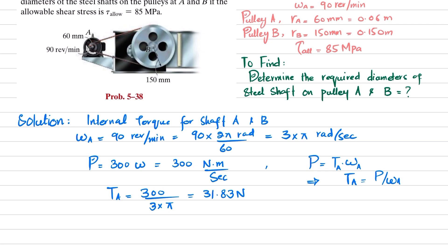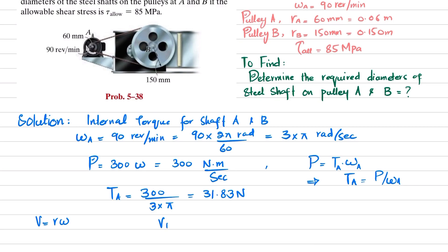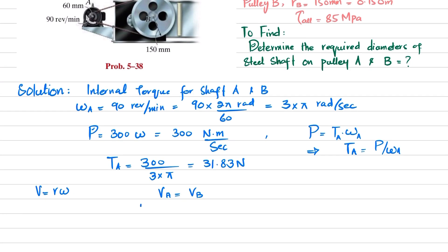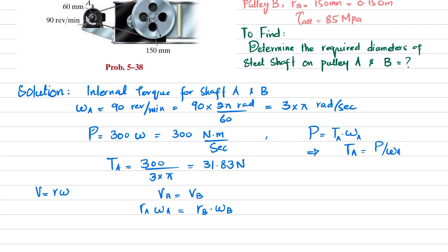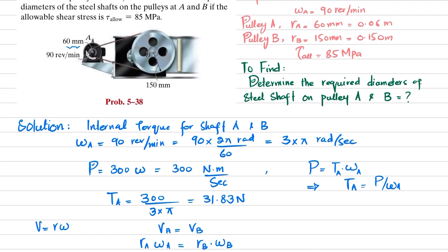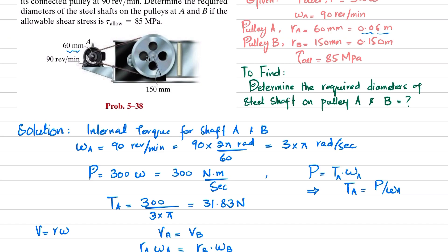The pulleys are connected by a belt, so the linear velocity at the belt is the same for both pulleys: v_a equals v_b. Therefore, r_a times omega_a equals r_b times omega_b. The radius of pulley A is 60 millimeters, or 0.06 meters, and the radius of pulley B is 150 millimeters, or 0.150 meters.